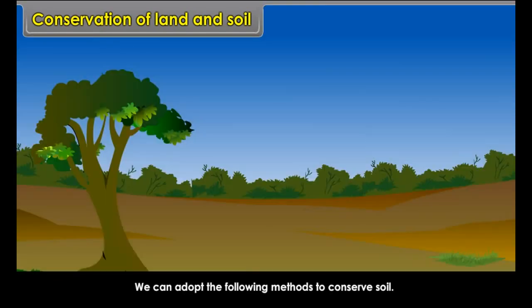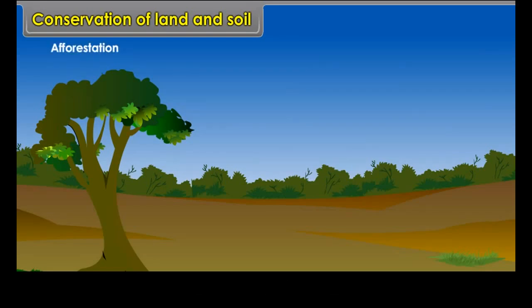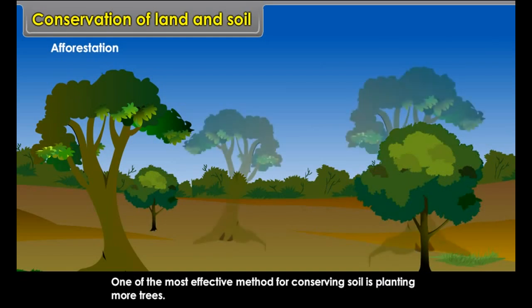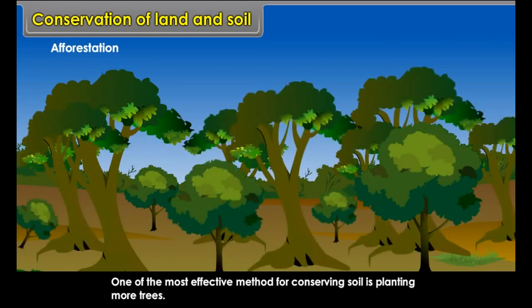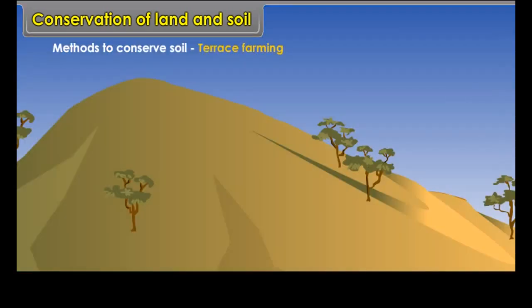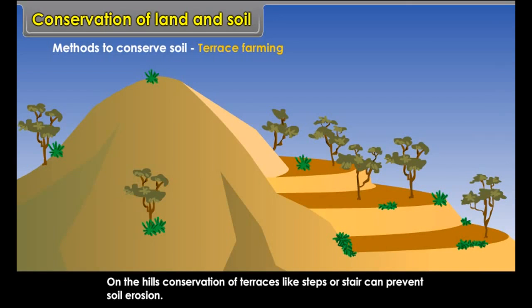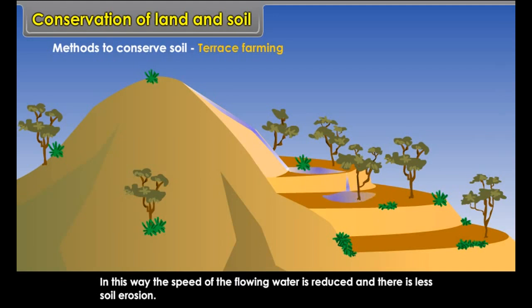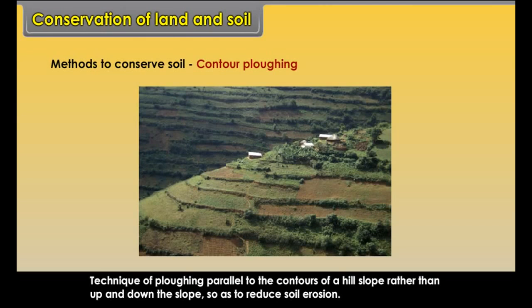We can adopt the following methods to conserve soil. Afforestation: one of the most effective methods is planting more trees — the roots of trees hold the soil particles together and reduce soil erosion. Terrace farming: on the hills, construction of terraces like steps or stairs can prevent soil erosion, as the speed of flowing water is reduced. Contour Plowing: technique of plowing parallel to the contours of a hill slope rather than up and down, so as to reduce soil erosion.